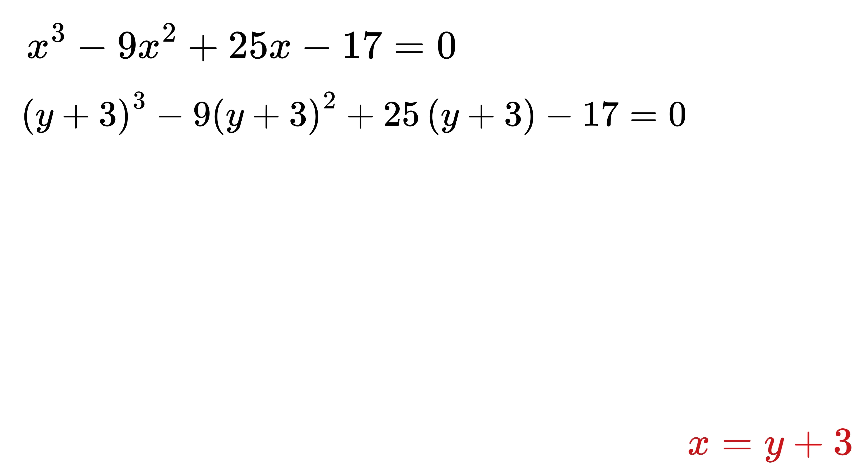Great! Now let's expand each of these terms carefully. We start with (y + 3)³. Using the identity (a + b)³ = a³ + 3a²b + 3ab² + b³, we plug in a as y and b as 3. So we get y³ + 9y² + 27y + 27.